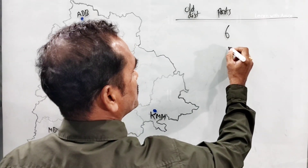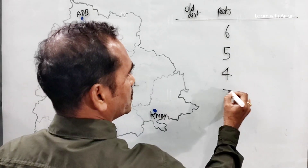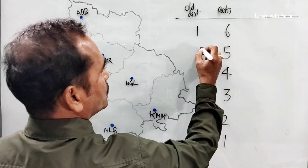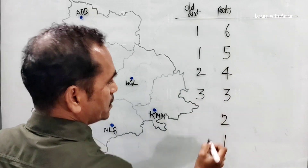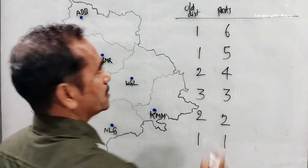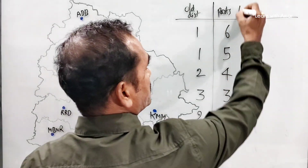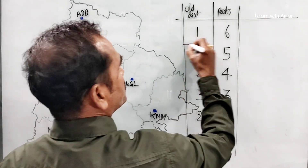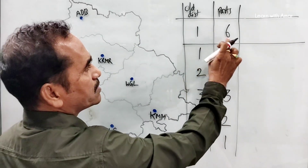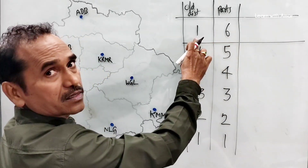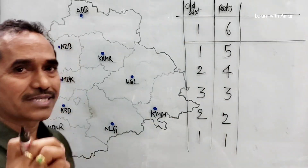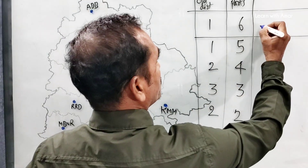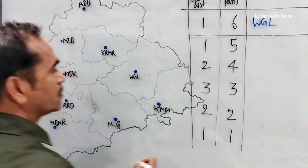In the consolidation table, write 6, then 5, 4, 3, 2, and 1. Now, all districts — you go like this. How many districts became 6 parts? It is 1 district. One district became 6 parts. That district is Warangal — the original Warangal district.